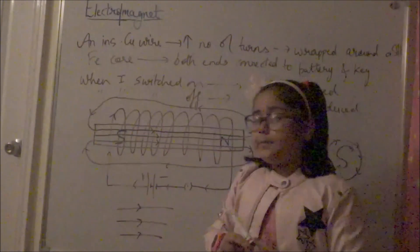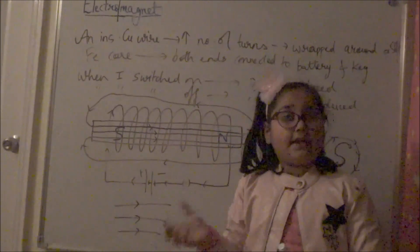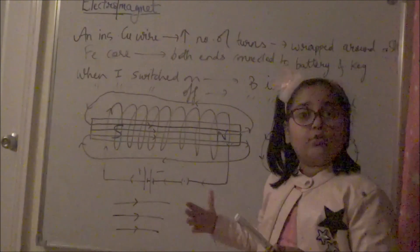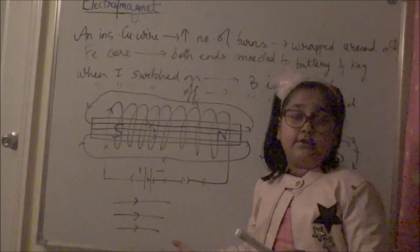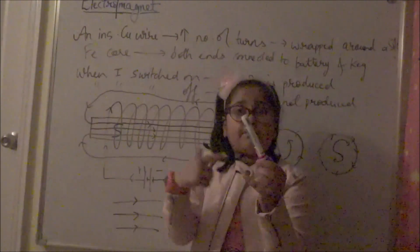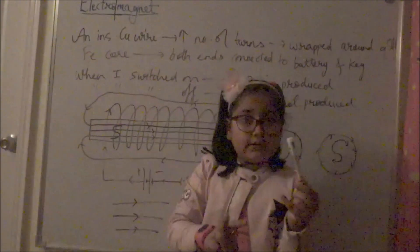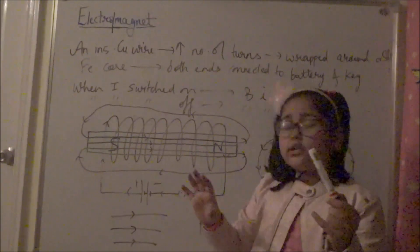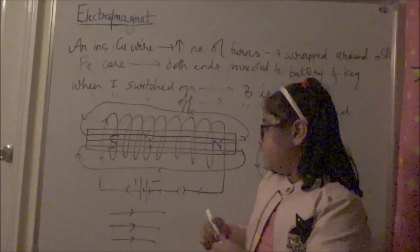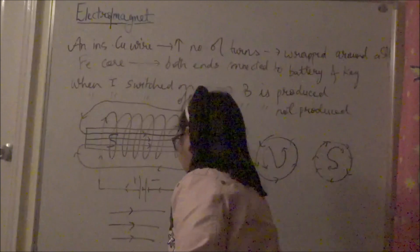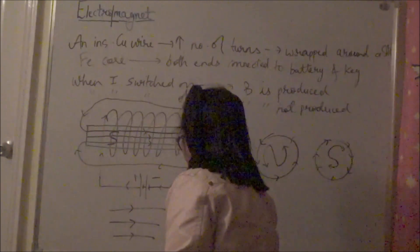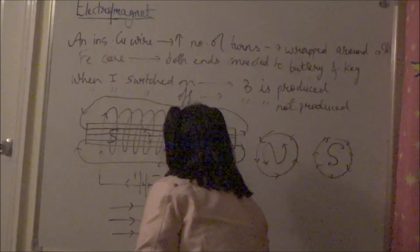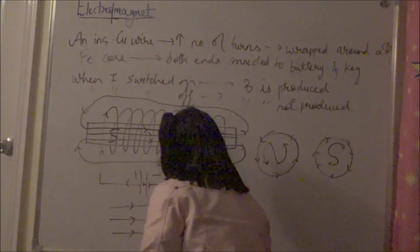The magnetic field lines inside are parallel, equidistant, and straight — they represent a uniform magnetic field. Inside a bar magnet, inside a solenoid, or inside an electromagnet, there is a uniform magnetic field represented by straight, parallel, equidistant lines.